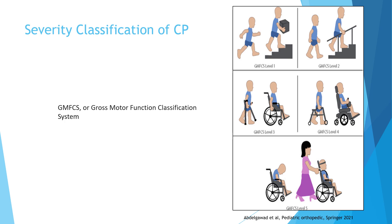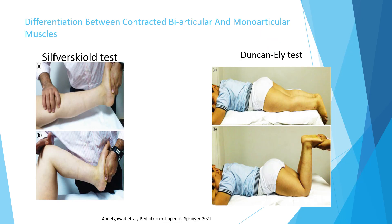GMFCS level 5 means wheelchair-bound — the child has to be in a wheelchair and someone pushes it. An important part of examining a patient with cerebral palsy is to differentiate whether stiffness is coming from a muscle that crosses two joints (biarticular) or one joint (monoarticular), because this is important for Botox or muscle release decisions.